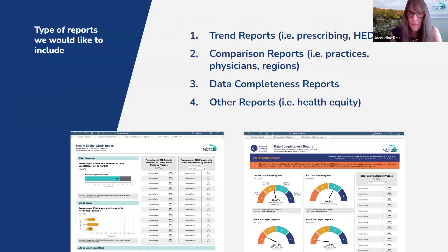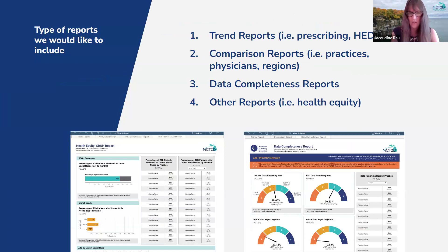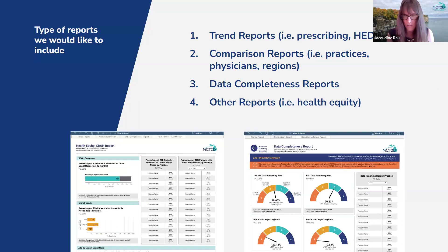The different kinds of reporting we want to include: we'll want to look at trends over time, including some HEDIS metrics and prescribing rates, so you can see how your practices and PO have improved over certain timeframes. We want to do comparison reports — practice to practice, practice to the collaborative, your practices to the region. We also want a data completeness report to identify gaps in data and track discrepancies. This section will also ultimately be where we build additional reports on health equity and social determinants of health as our data sources increase.